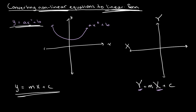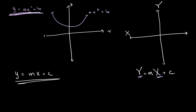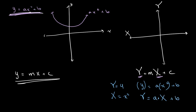Through that, we can say that to express y equals ax squared plus B in linear form, we just need to change the axes to capital X and capital Y. Looking back at our equation, if we take capital Y equal to y and capital X equal to x squared, then we can substitute to get Y equals a times capital X plus B.